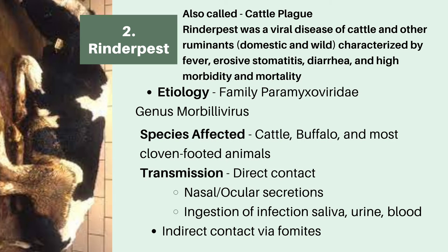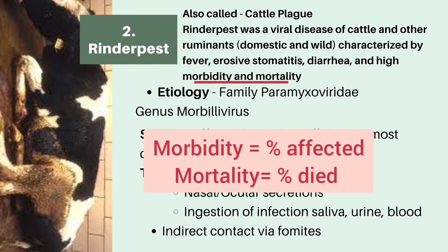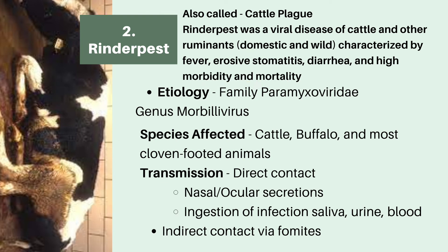Now let's talk about our second viral disease for today — Rinderpest. Rinderpest is also known as Cattle Plague, and it is a viral disease of cattle and other ruminants characterized by fever, erosive stomatitis, diarrhea, and high morbidity and mortality. Stomatitis is a condition with painful swelling and sores in the mouth region. Morbidity is the percentage of animals affected by the disease, and mortality is the percentage that will die. Rinderpest is caused by a virus of the family Paramyxoviridae, genus Morbillivirus, affecting cattle, buffalo, and most cloven-footed animals. Transmission is through direct contact via nasal and ocular secretions, ingestion of infected saliva, urine, and blood, and also through indirect contact via fomites.